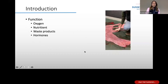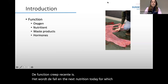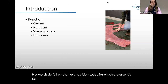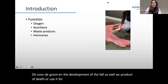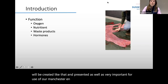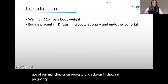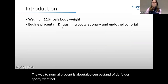The function of the placenta is to give oxygen towards the foal, and to provide nutrition essential for the growth and development of the foal. Waste products produced by the foal go back via the umbilical cord towards the mare and are excreted. The placenta is also a very important producer of hormones such as estrogen, progesterone, and relaxin during pregnancy. The weight of a normal placenta is about 11% of the foal's body weight at birth.